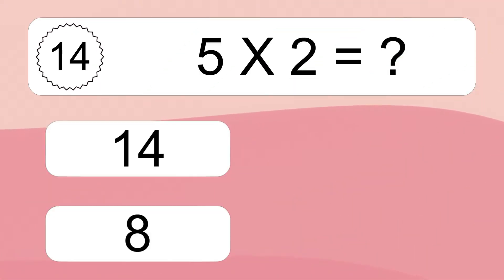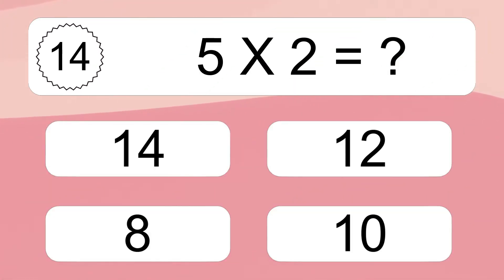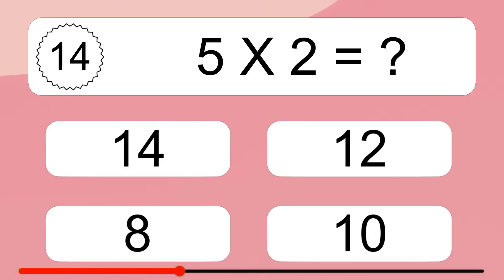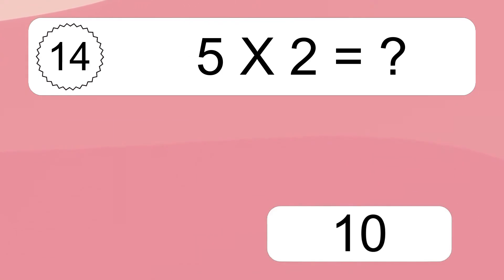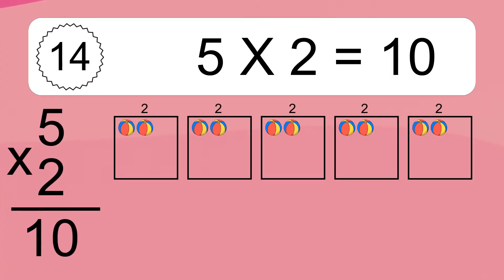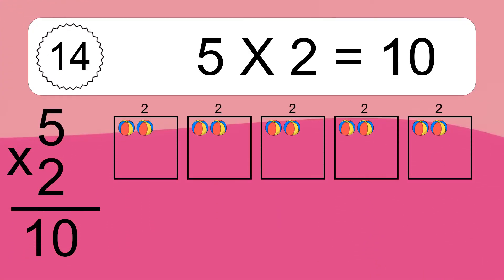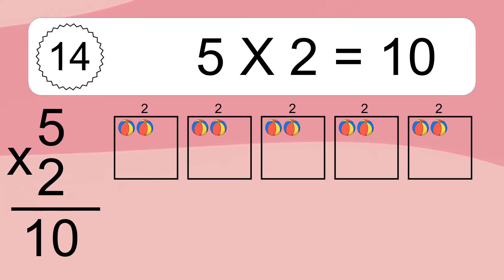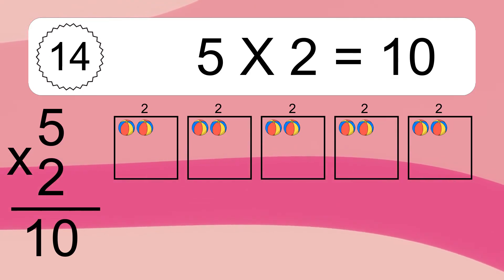5 times 2 equals what? 5 times 2 equals 10. We have 5 boxes, and each box has 2 colorful balls inside. If you count all the balls in all the boxes together, you will have 5 times 2 balls. This equals 10 balls.